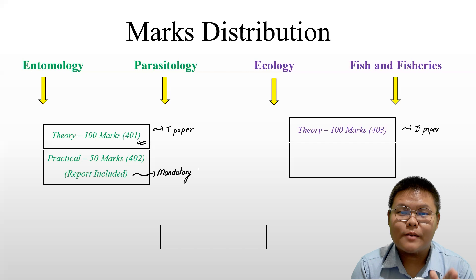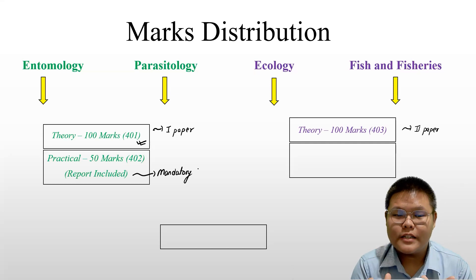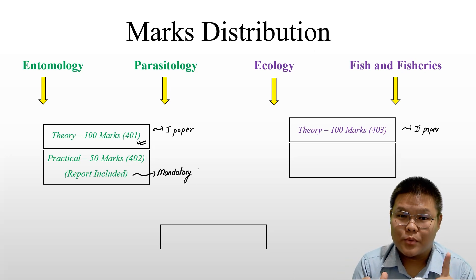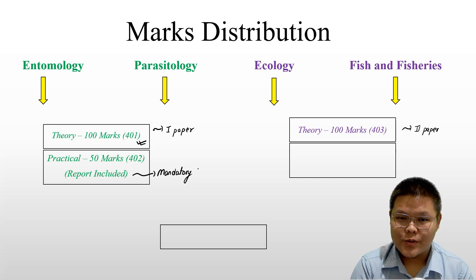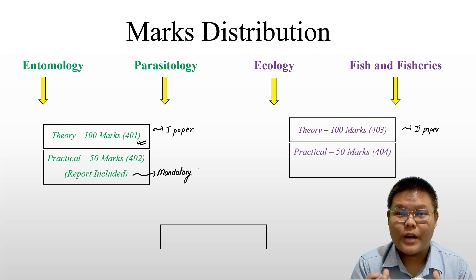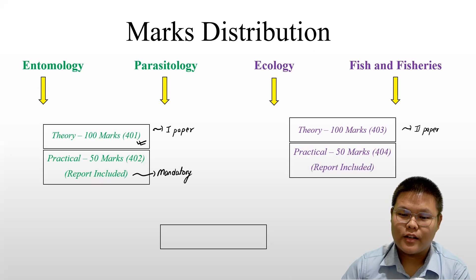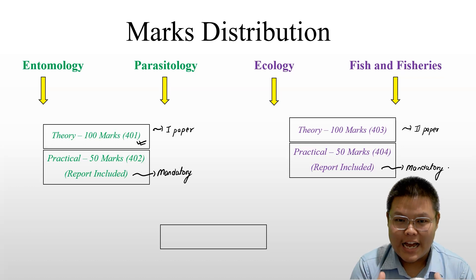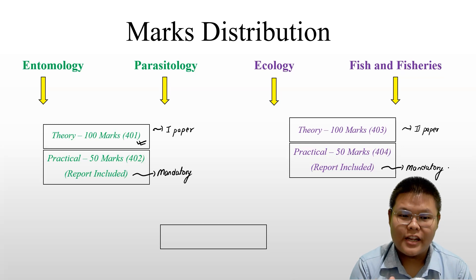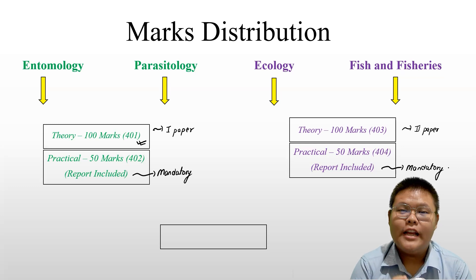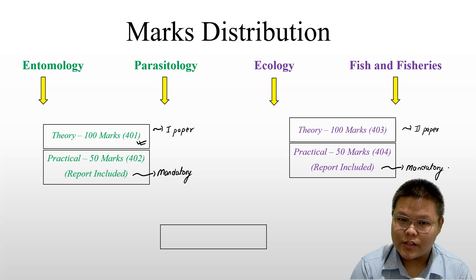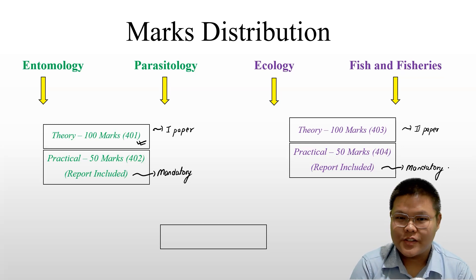For Entomology and Parasitology, the theory is 100 marks and the practical is 50 marks, with code 402 for the practical component. A report must also be submitted — it is mandatory. Similarly, for Ecology and Fish and Fisheries, practical marks are 50 with code 404, and a report is also mandatory.